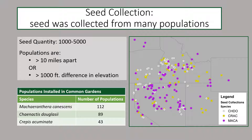Seed collection took place in 2018 and we relied heavily on our project partners to enable seed collection from across the geographic range of these species. Seed collections included between 1,000 and 5,000 seeds from populations that were greater than 10 miles apart or with greater than a thousand feet difference in elevation. The map on the right shows the distribution of these populations across the western U.S., and this giant effort allowed us to install between 43 and 112 populations of each species within our common garden framework.